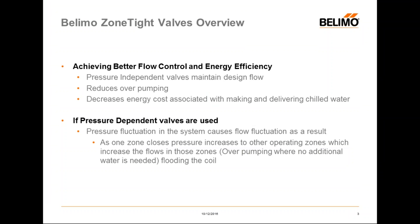A zone-type valve — we try to achieve better flow control and efficiency by using a higher quality valve. We use a pressure-independent valve, which maintains design flow. It reduces over-pumping and decreases the energy costs associated with making and delivering chilled water. If pressure-dependent valves are used, pressure fluctuations in the system will cause flow fluctuations as a result.